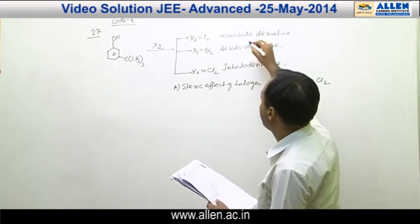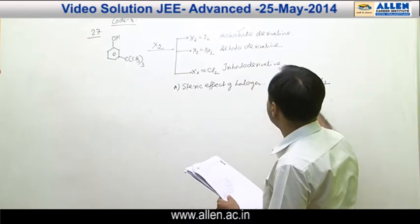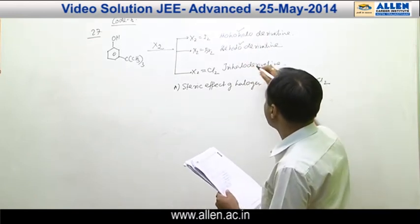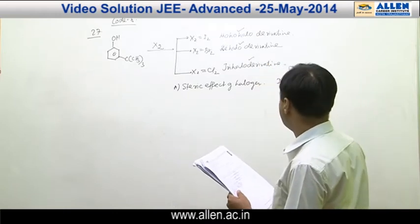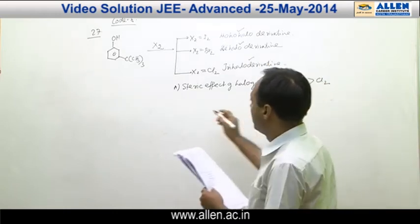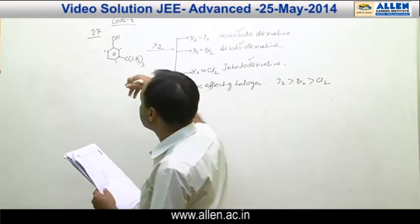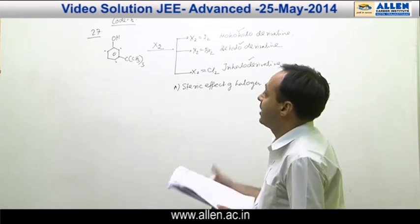In iodine, when iodine is added, it is monohalogenation. When bromine is added, it is dihalogenation. And when chlorine is added, it is trihalogenation. Because size of halogen decreases, you know, the product attacking site increases.